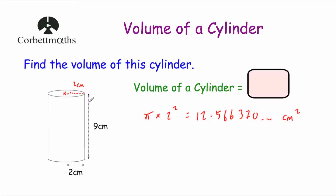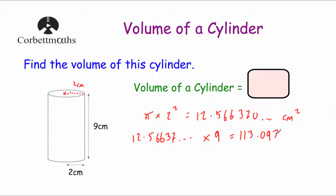So that's the area of the cross section. Now we want to find the volume of the cylinder, so we just need to multiply by how tall the cylinder is. Taking our 12.566 (or 4 pi) and multiplying by 9 — the height of the cylinder — gives us 36 pi, or 113.097 centimetres cubed. Rounded to one decimal place, that would be 113.1 centimetres cubed.